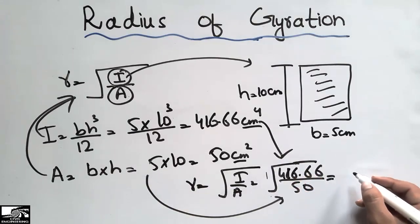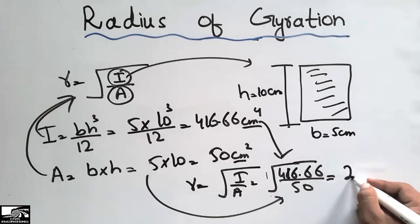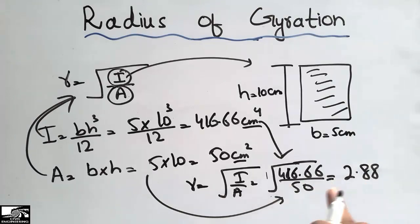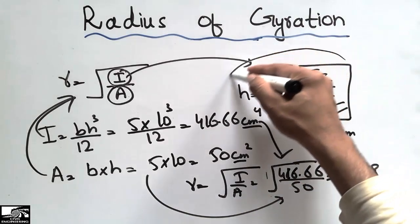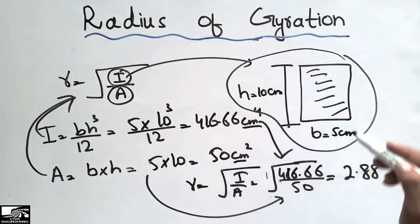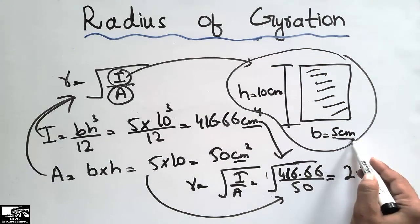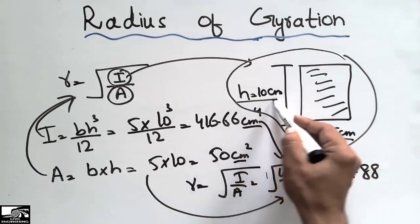Which comes out to be 2.88. So the radius of gyration for this rectangular object having dimensions of 5 centimeters width and 10 centimeters height is 2.88.